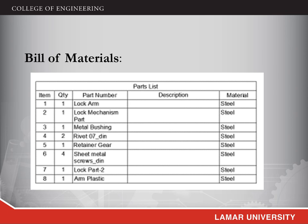The below metals contain all steel metal parts like the lock arm, lock mechanism, metal bushing, rivet, retainer gear, sheet metal screws, lock part 2, and arm plastic. All these are made of steel. This brings us to the bill of materials.